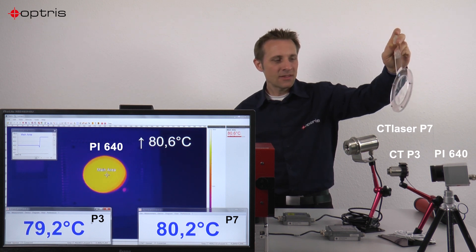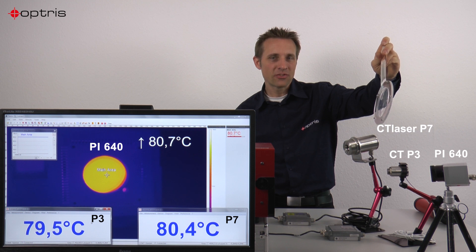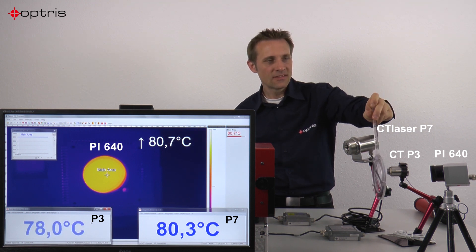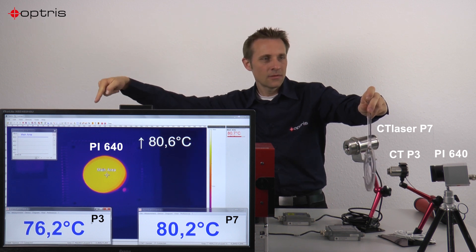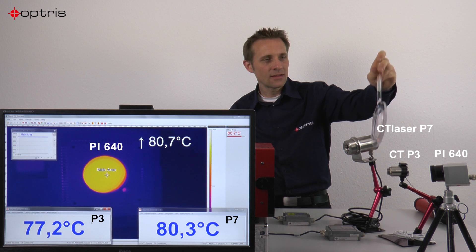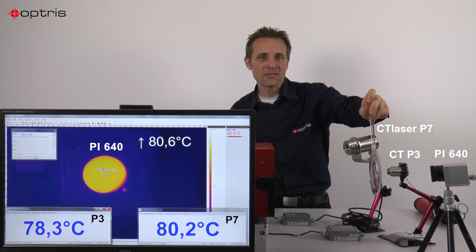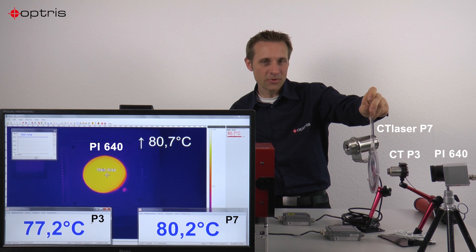Now let's have a look at our P3 sensor which has a wavelength of 3.43 microns. You can see on the left side of the screen at the bottom that I get exactly the same temperature as the black body. So the FEP material is also transmissive at a wavelength of 3.43 microns.